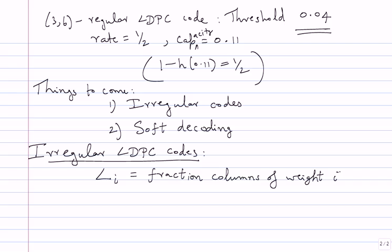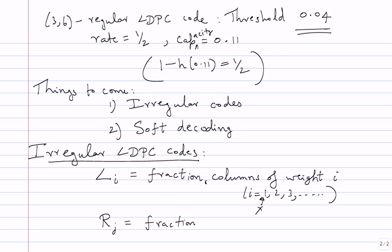I is indexed 1, 2, 3, and so on. You will see later on that typically even i equals 1 will not be allowed. Similarly, I will have R_j, which is the fraction of rows of weight j, where j goes 1, 2, and so on. For regular codes, L sub WC will be equal to 1 and all other L_i's will be 0; R sub WR will be equal to 1 and every other R_j will be 0. Regular codes are a special case of irregular codes.